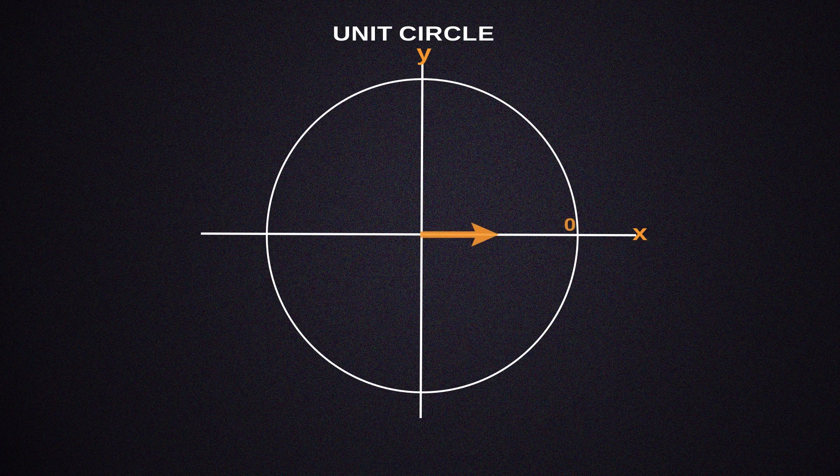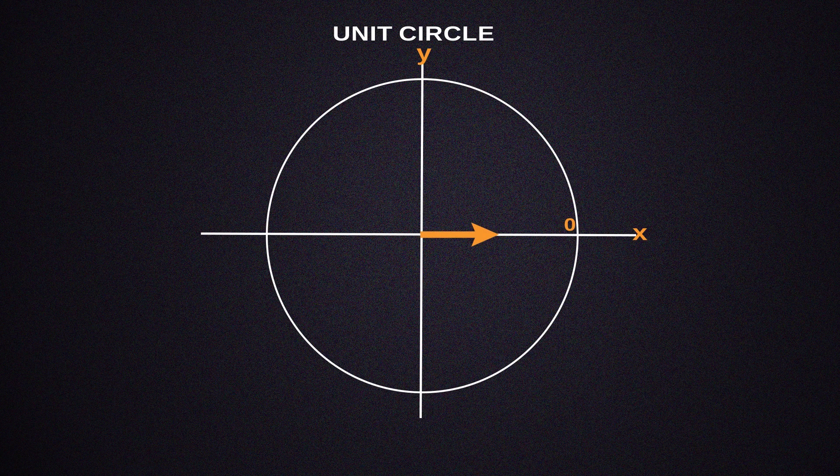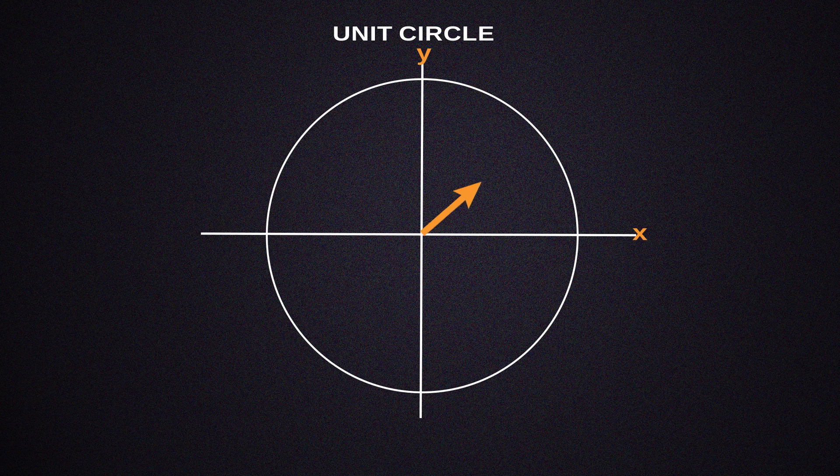On the unit circle, determining an angle always begins on the right side. After that, you rotate and proceed up counterclockwise until you are at the selected angle.